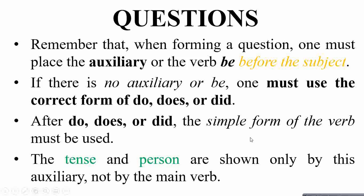After DO, DOES, or DID, the simple form of the verb must be used. Regardless of whether the question is in past tense, you have to use the simple form of the verb. The tense and person are shown only by the auxiliary and not by the main verb.